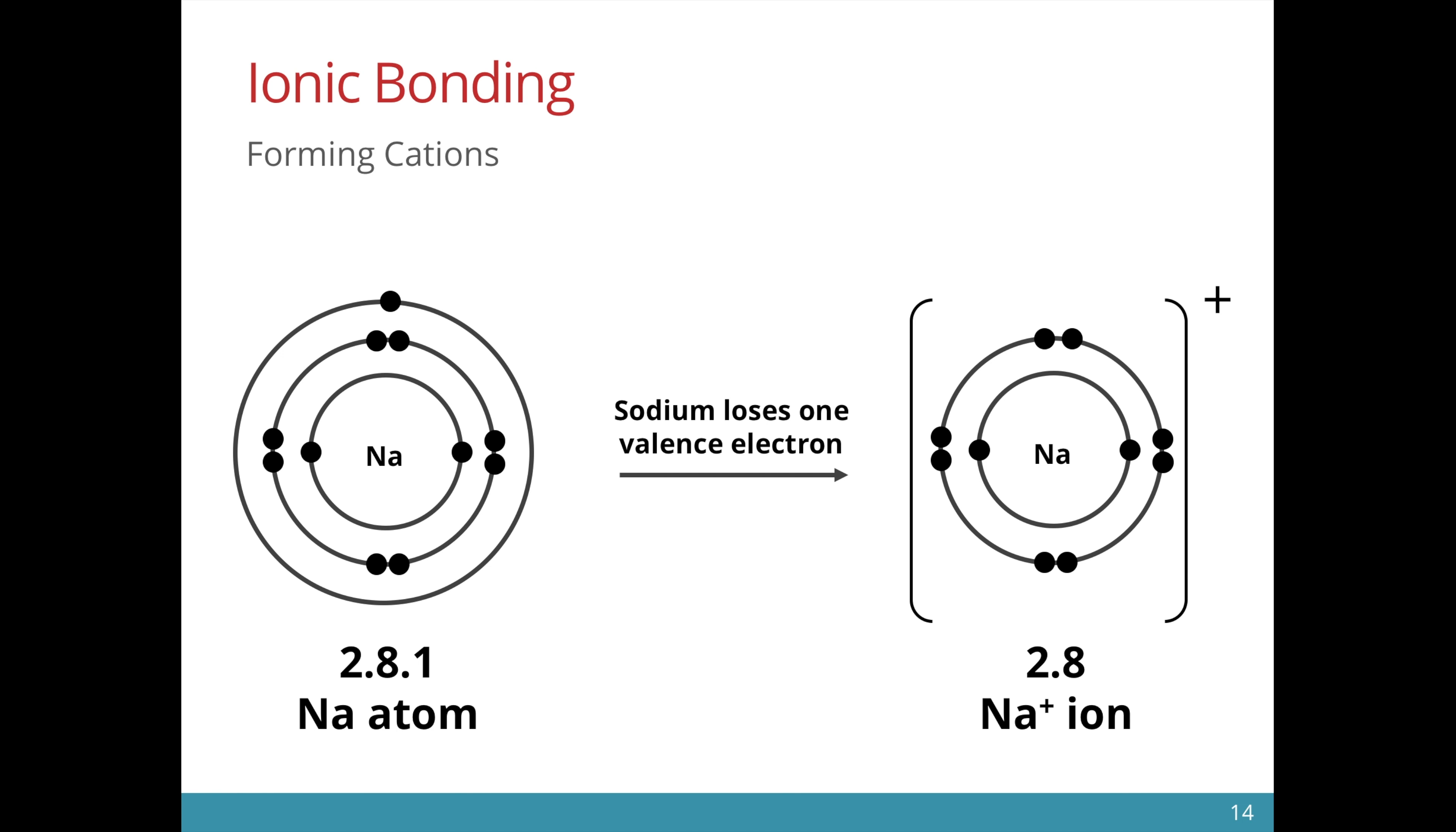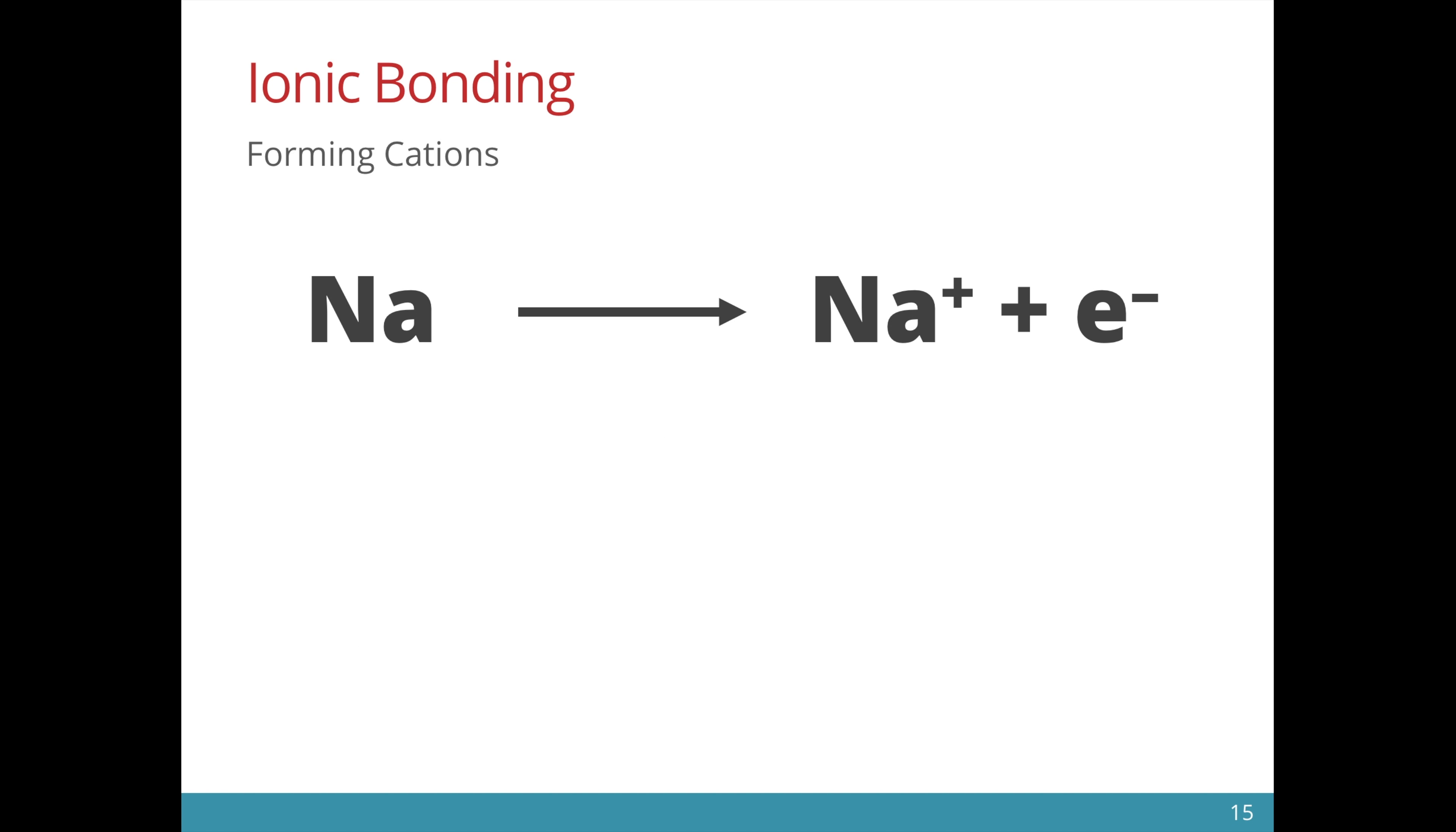When an electron is lost, there is now more protons than electrons, making this particle positively charged. We can also represent this change in terms of an equation. We start off with a sodium atom. We form a sodium ion. An electron is given off.